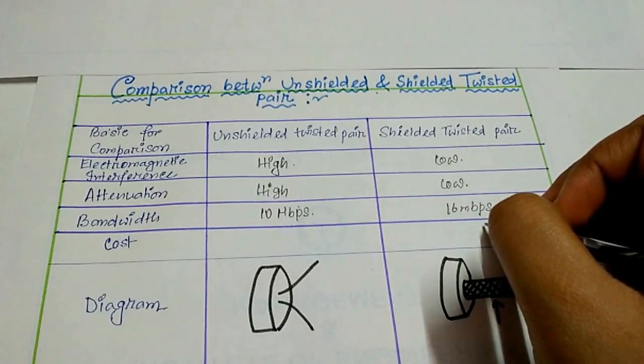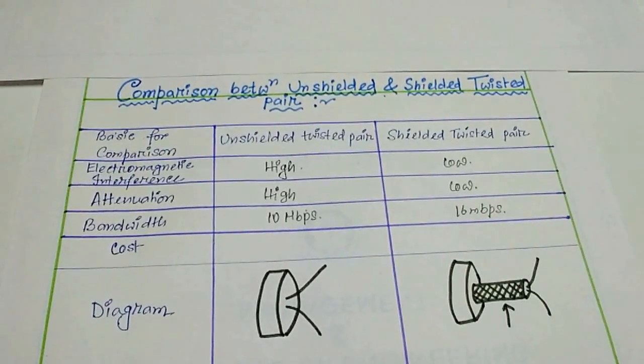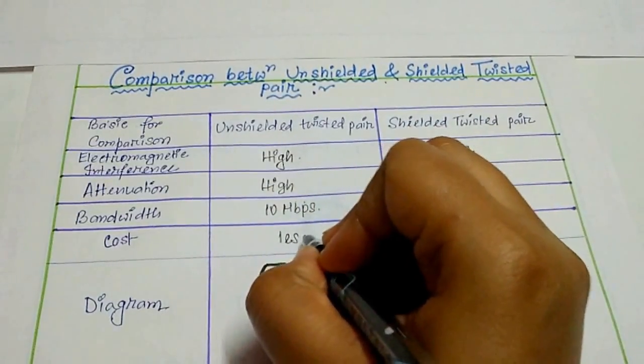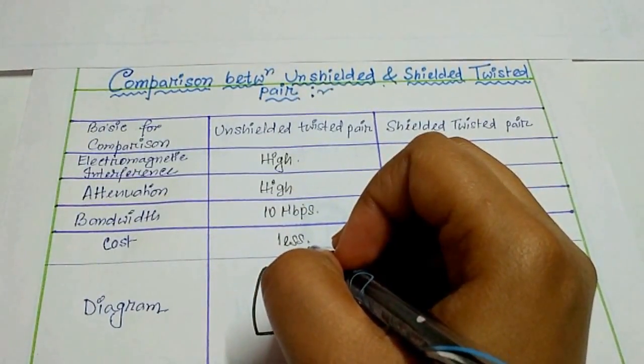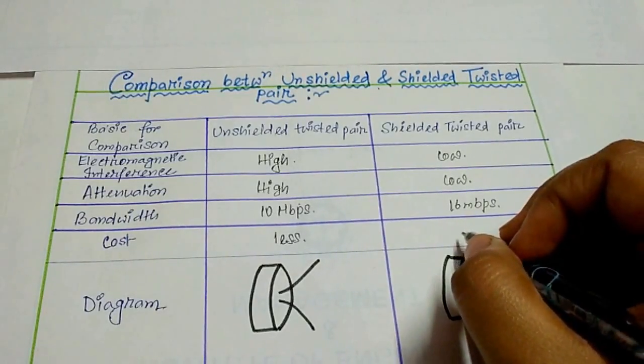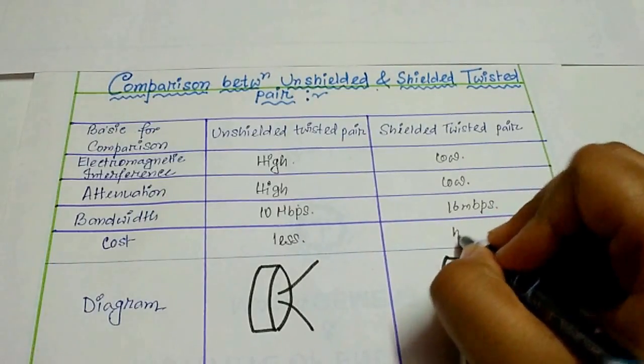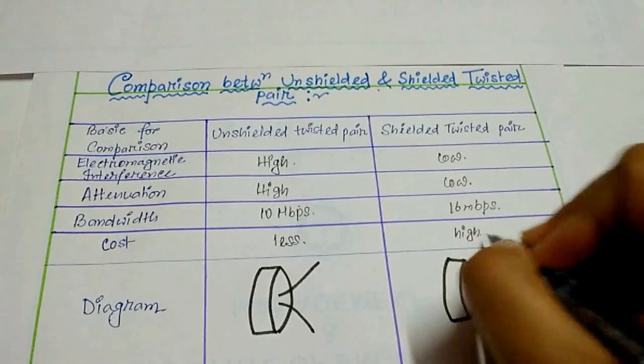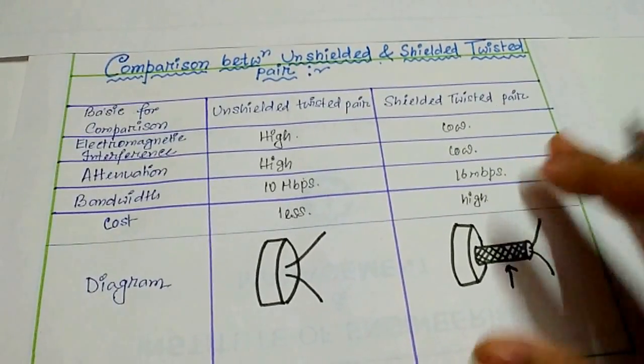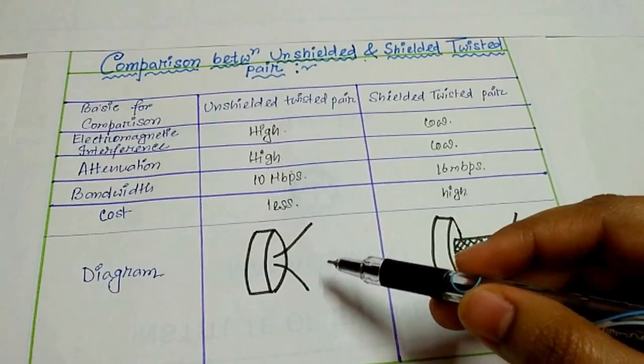The cost of unshielded twisted pair is less compared to shielded twisted pair. The cost of shielded twisted pair is high. Now comes the diagram. This is the diagram of unshielded twisted pair.